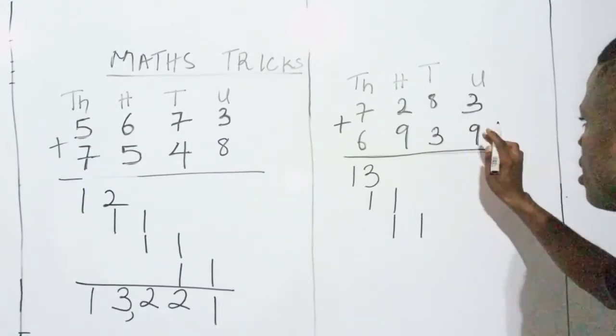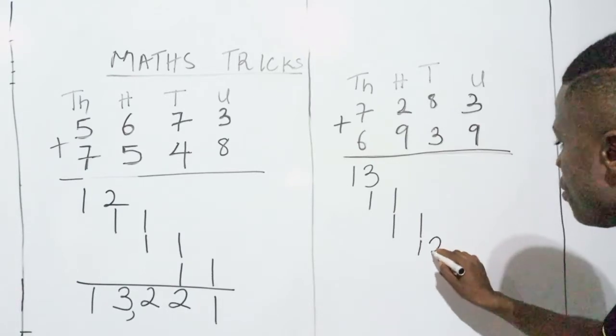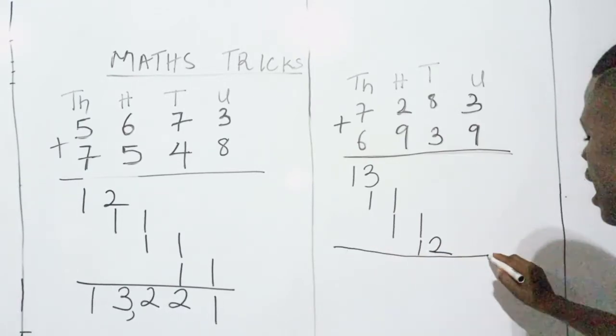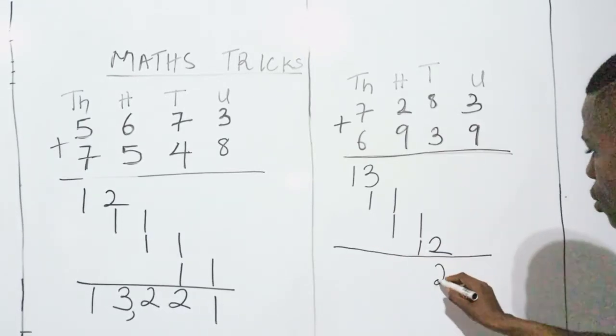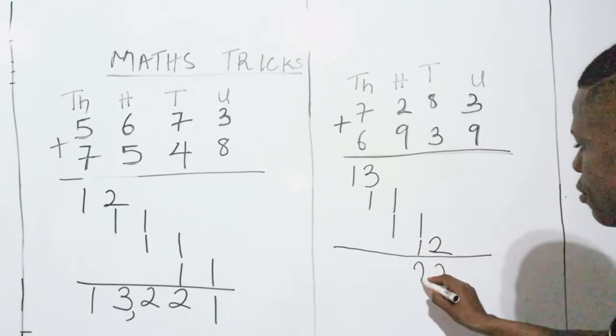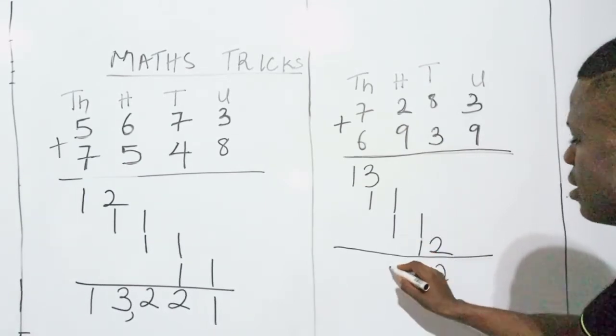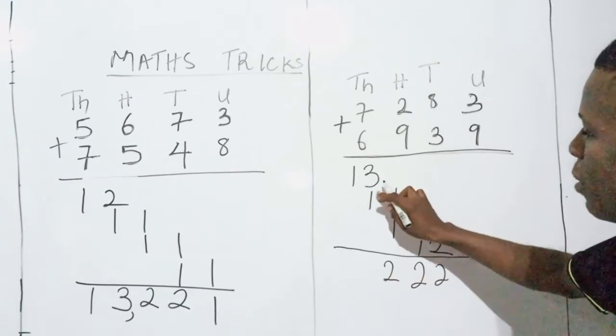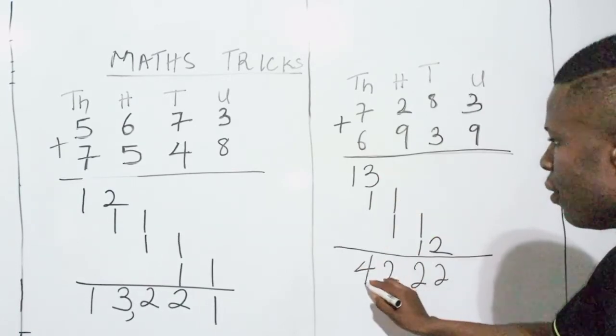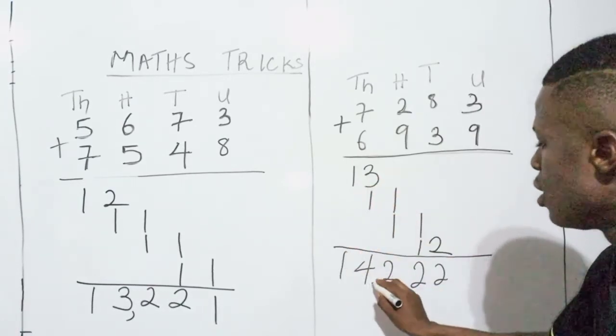9 plus this, 3 plus 9 is 12. I have to write my 12. At the end, I bring down my 2. 1 plus 1 is 2. I have to write 2. 1 plus 1 is still 2. I have to write 2. 3 plus 1 is 4. I bring down 4. And I bring down my last one.